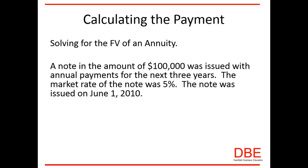Calculating the payment — basically what you're doing here is solving for the present value of an annuity. A note in the amount of one hundred thousand dollars was issued with annual payments for the next three years. The market rate of the note was five percent, and the note was issued on June 1, 2010.